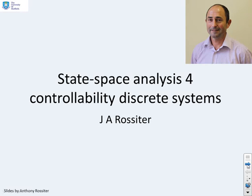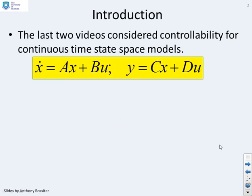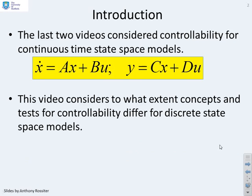This video extends the discussion of controllability to discrete systems. The last two videos looked at controllability for continuous-time state-space models of the form x dot equals ax plus bu and y equals cx plus du. This video considers to what extent the same concepts and tests for controllability can be used for discrete state-space models.